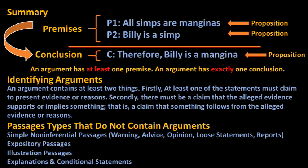An argument is composed of at least one or more premises. An argument has exactly one conclusion, though you can construct many arguments with the same premises to derive multiple conclusions from them. The premises and the conclusion of an argument are always propositions.